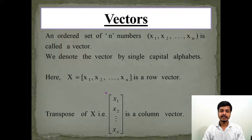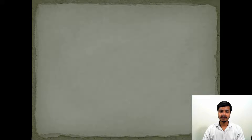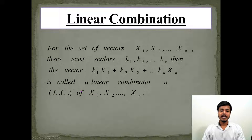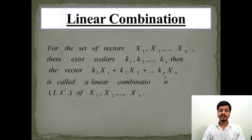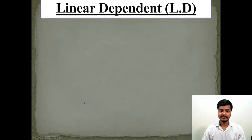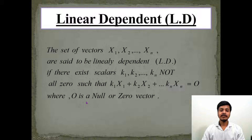Now that the vector is clear, let's see what a linear combination is. If you have a set of vectors x1, x2, ..., xn, then for each of these vectors, if there are n vectors, n scalars must be there. The vector formed by scaling and adding these vectors is called a linear combination. We denote the linear combination by LC.